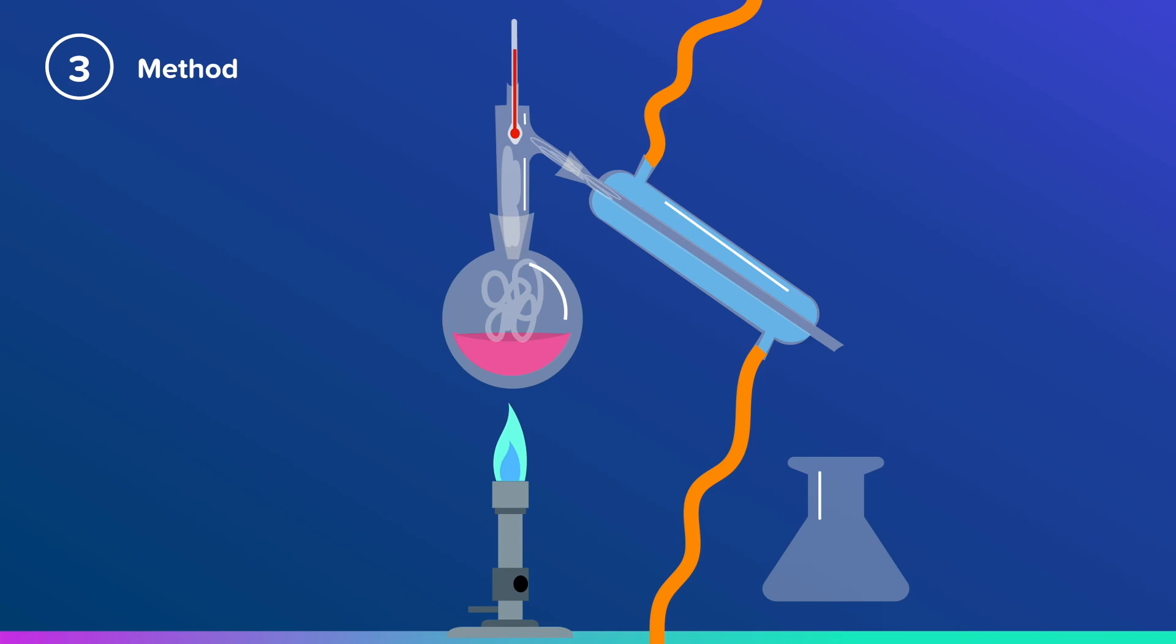As the water evaporates, it travels up through the three-way adapter, and then down the condenser. The water in the condenser cools down our liquid, turning it from a gas into a liquid, making it condense to change state. That liquid drips its way down the condenser and then into the conical flask.